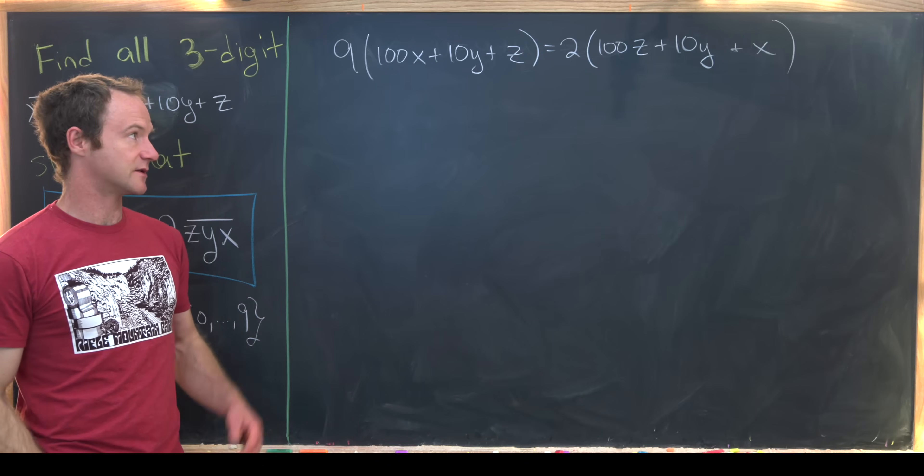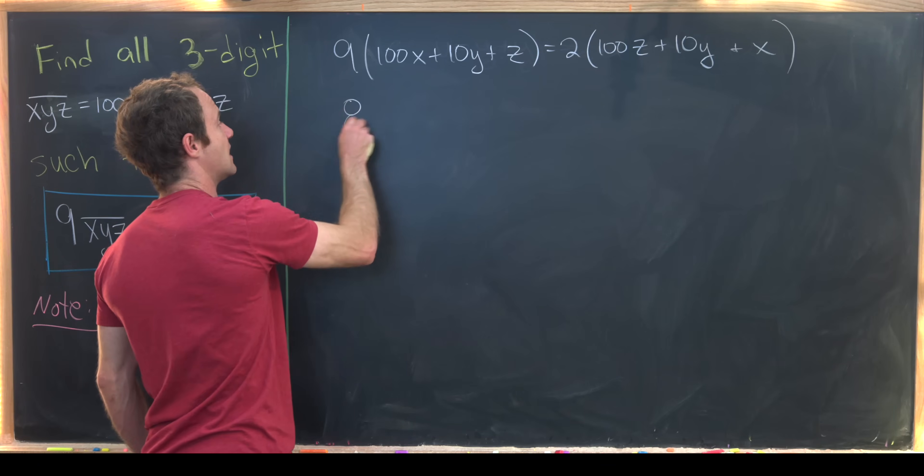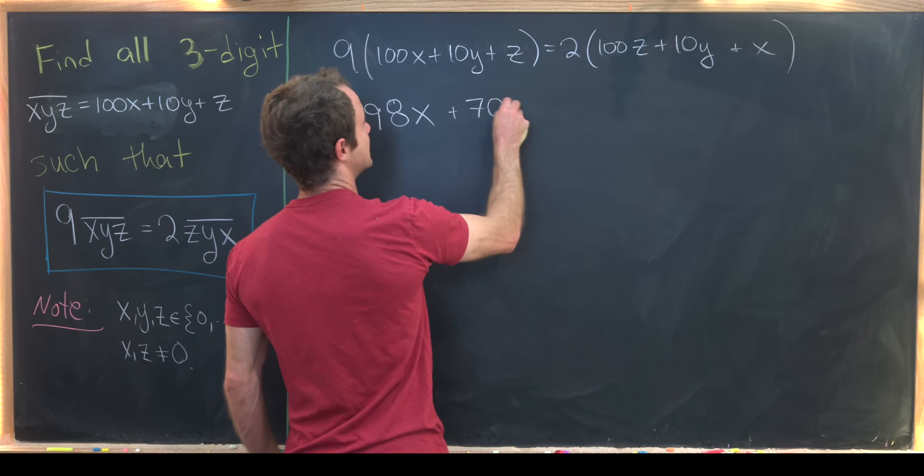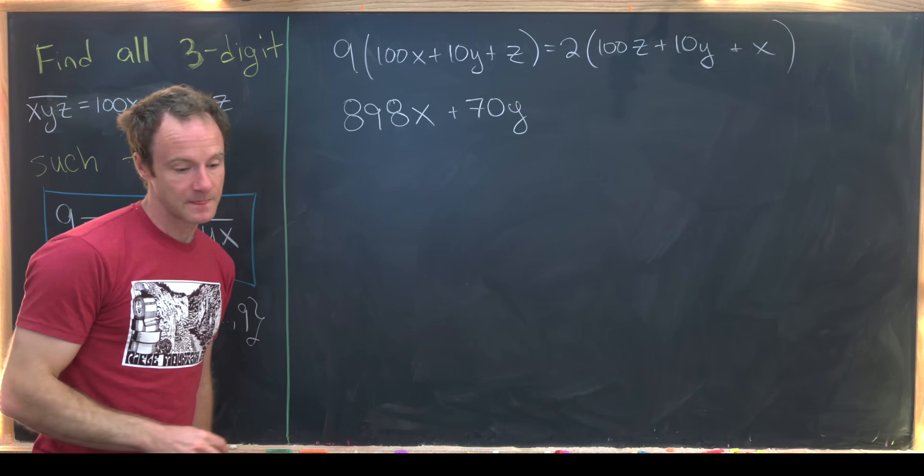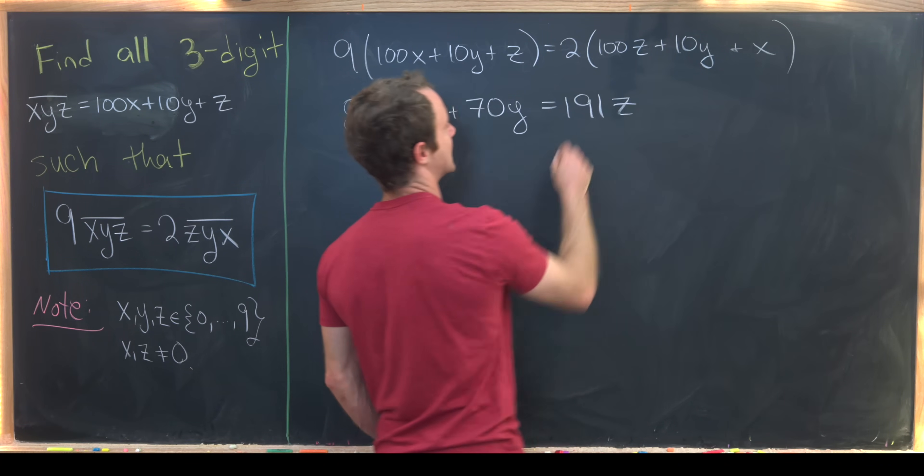But now we can move some things around. It's not too hard to see how we can move things around. And we'll get 898x plus 70 times y equals 191 times z.